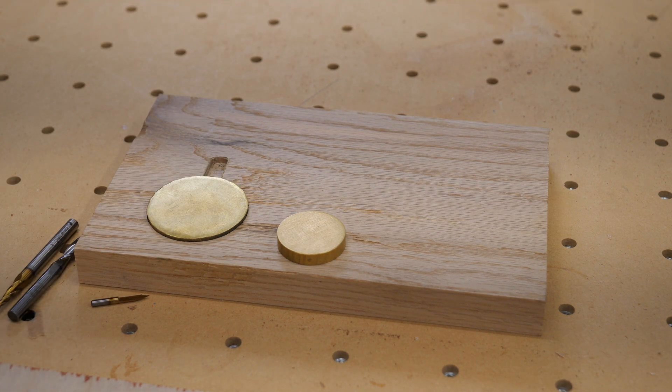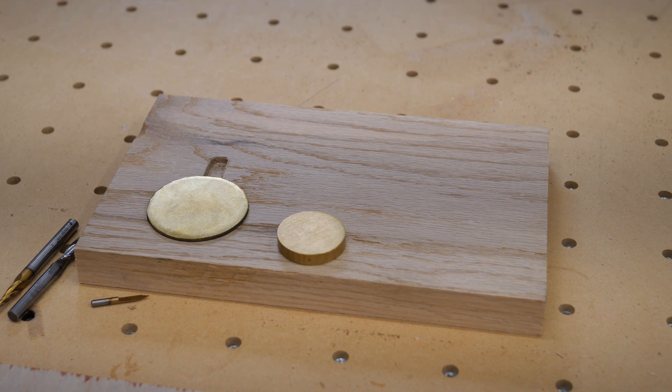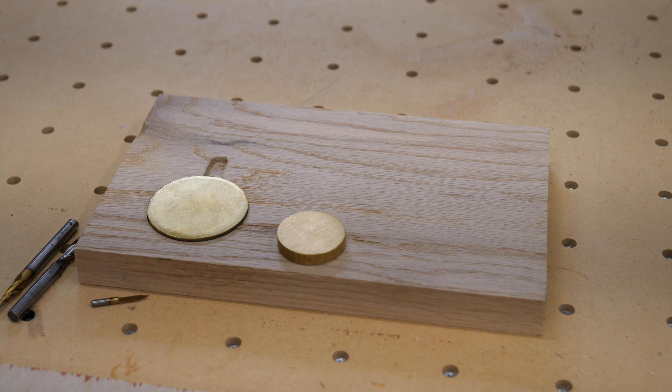For speed, I'll put my speeds and feed rates in the description below. Like I said, you really just need to go slow and take light passes. It depends on your machine as to how rigid it is and how fast you can go. But that'll at least give you a starting point. You can adjust from there, whether you need to speed up or slow down.